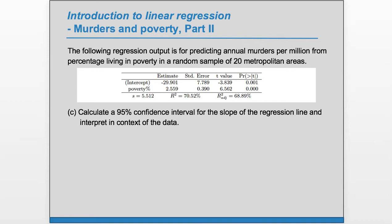The general form for a confidence interval for the slope is b1, our estimate, plus or minus t-star times the standard error of that estimate. This also has n minus 2 degrees of freedom. b1 is given to us in the table, as is the standard error. We just plug it in as is.